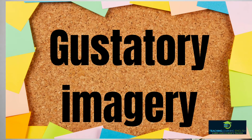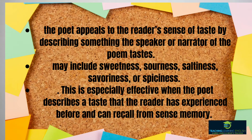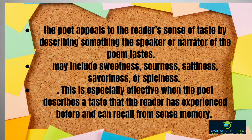The third type is gustatory imagery. In this form of imagery, the poet appeals to the reader's sense of taste by describing something the speaker or narrator of the poem tastes. It may include sweetness, sourness, saltiness, or spiciness. This is especially effective when the poet describes a taste that the reader has experienced before and can recall from sensory memory. This is one of the examples of gustatory imagery.